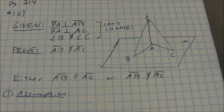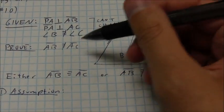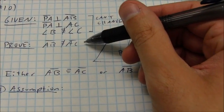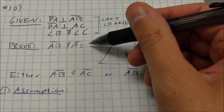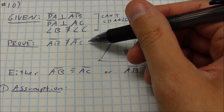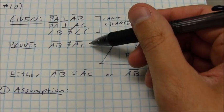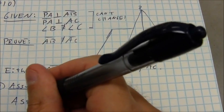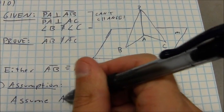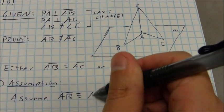So as a result, I'm going to make my assumption. My assumption is instead that segment AB is congruent to AC. And I'm going to show that for some reason, that causes some type of problem, a contradiction. So I'm going to state that I'm assuming that segment AB is congruent to segment AC.